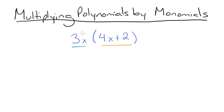So that'll look like this. You'll multiply the monomial, 3x, by the first part of the polynomial, so by this 4x. So we'll have 3x times 4x. And then we'll add, multiplying the monomial by this part of the polynomial, the plus 2. So then we'll have plus 3x times positive 2.